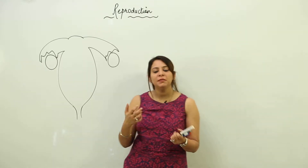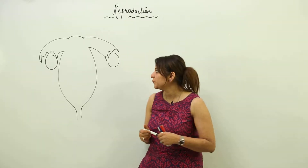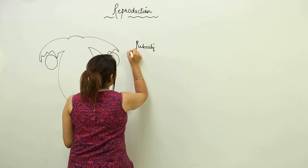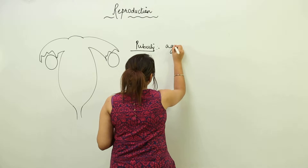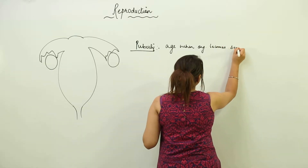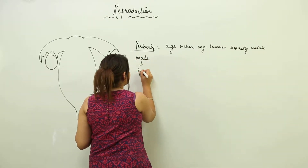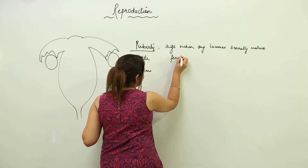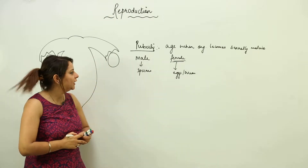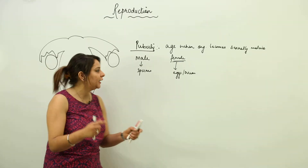We are aware of the male and female reproductive systems. Now we will focus on the fate of the egg produced in the ovary. Since puberty, egg formation starts. Puberty is the age when an organism becomes sexually mature — males start producing sperms and females start producing eggs. So sperm formation and egg formation both start at puberty.